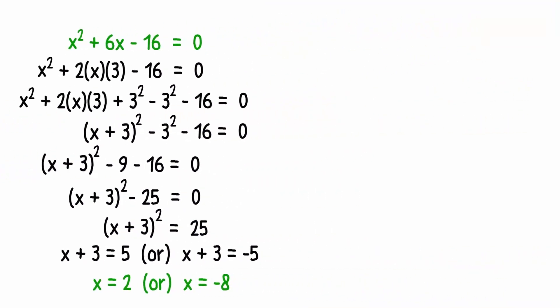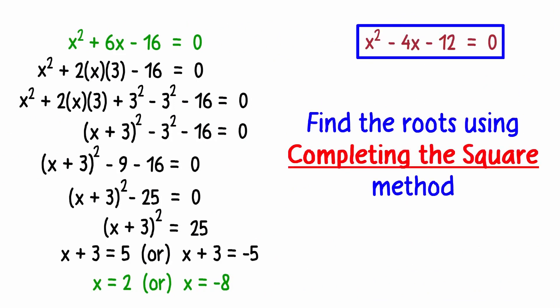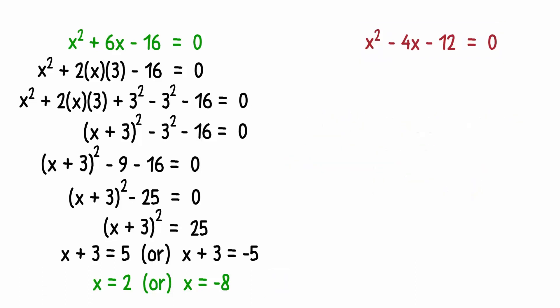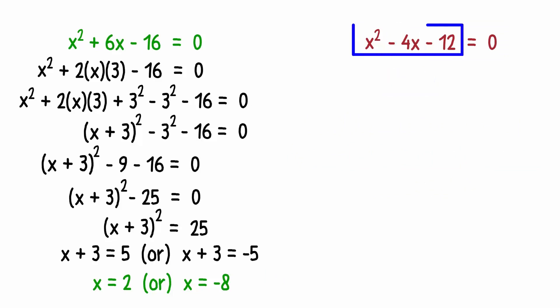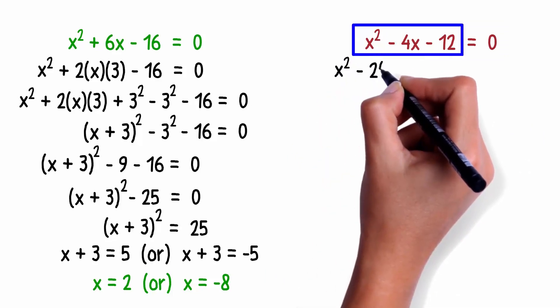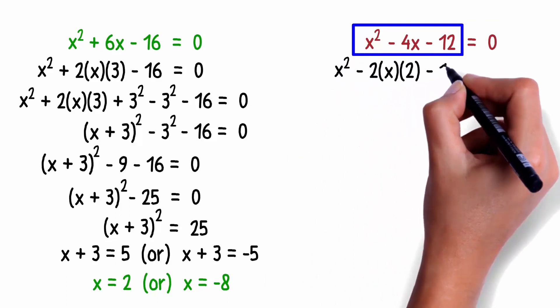Now let's try another example. We need to find the roots of this quadratic equation using the completing the square method. Why don't you give it a try? The first step is to look at the variable part. Next, we write this in the form 2ab. We can write it as x² - 2 times x times 2 minus 12 equals 0.